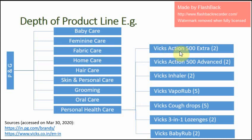Vicks Action 500 Extra is offered in two variants. Vicks Action 500 Advanced is also offered in two variants. Vicks Inhaler is offered in two variants. Vicks VapoRub is offered in five different kinds of variants. Vicks Cough Drops is also offered in five variants. Vicks 3-in-1 Lozenges is offered in two variants, and Vicks BabyRub is also offered in two variants.